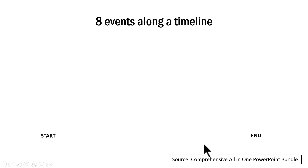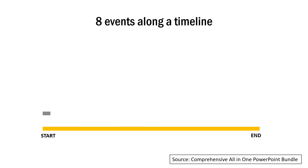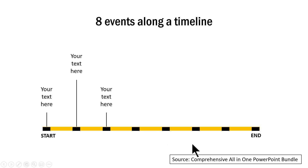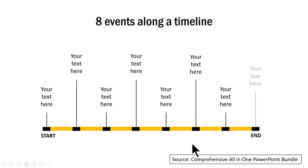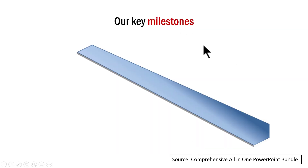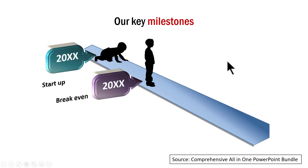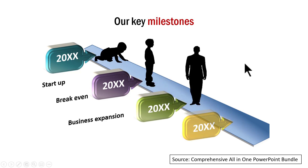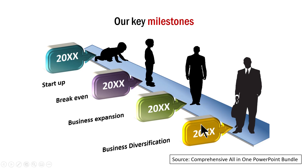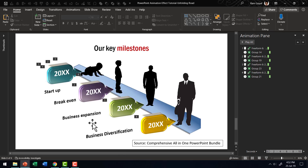The next example shows eight events along a timeline — on a click you reveal all eight points and then talk about each one on a click. There is also an interesting way to show a timeline especially when creating videos. The last example shows key milestones in a metaphorical way — for example, showing how a company evolved from startup, to break-even, to business expansion, to business diversification — with shapes angled nicely and text angled along with them. You can replace any text with your own and use them in your slides very easily.